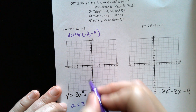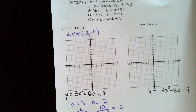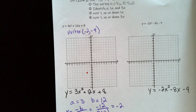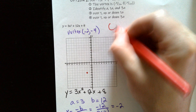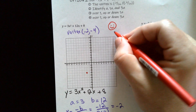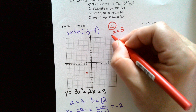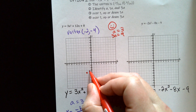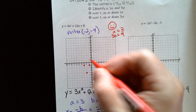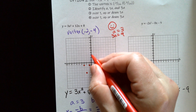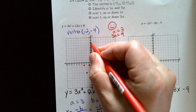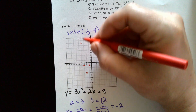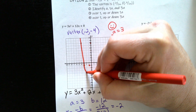So we go to negative two, negative four on the graph. The a is positive, so smiley face — opening upward. If our a is equal to three, that means our three a is equal to nine. One over three up, and then one over nine up, counting up nine on each side. And here is our parabola.